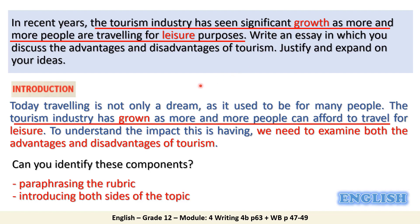The rubric says 'has seen significant growth' while in the introduction the writer says 'has grown as more and more people can afford to travel for leisure.' Then the writer introduces both sides of the topic: 'To understand the impact this is having, we need to examine both the advantages and the disadvantages of tourism.' In writing the introduction: make a general introductory statement, paraphrase the rubric, and introduce both sides of the topic.